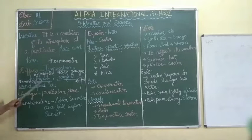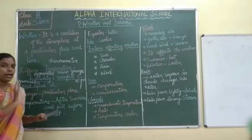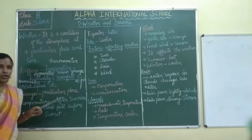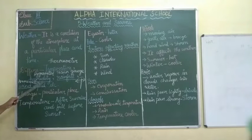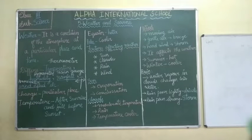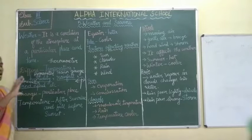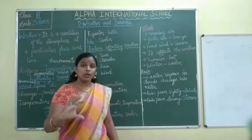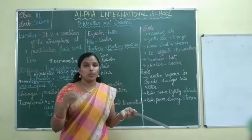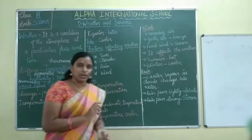By these instruments they can differ — by temperature they can compare the amount of temperature against yesterday. Then rainfall also you can compare, humidity also you can compare, and wind speed also you can compare. Now we are going to see changes — what makes the weather change.